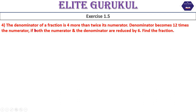Question number 4. The denominator of a fraction is 4 more than twice its numerator. The denominator becomes 12 times the numerator if both the numerator and the denominator are reduced by 6. Find the fraction. Now, question number 4 — we will see two conditions in the form of a fraction. So we will see the solution.